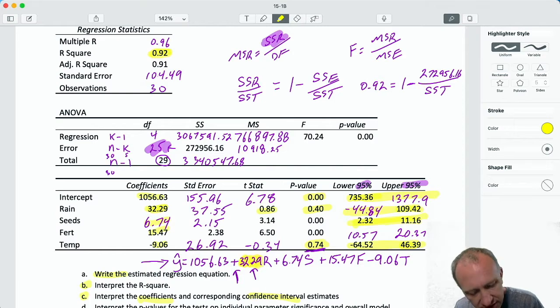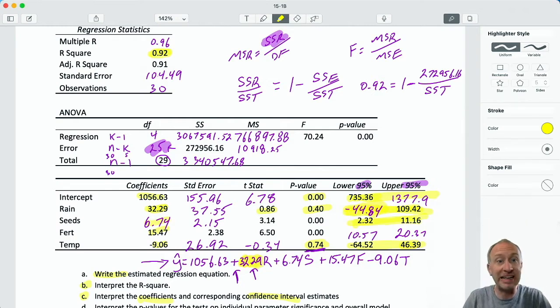So for each additional inch of rain that we receive, that contributes, this is an increase, so that increases average wheat yield by 32.29 pounds. So each additional inch of rain increases wheat yield by 32.29 pounds on average. These are point estimates of an average.